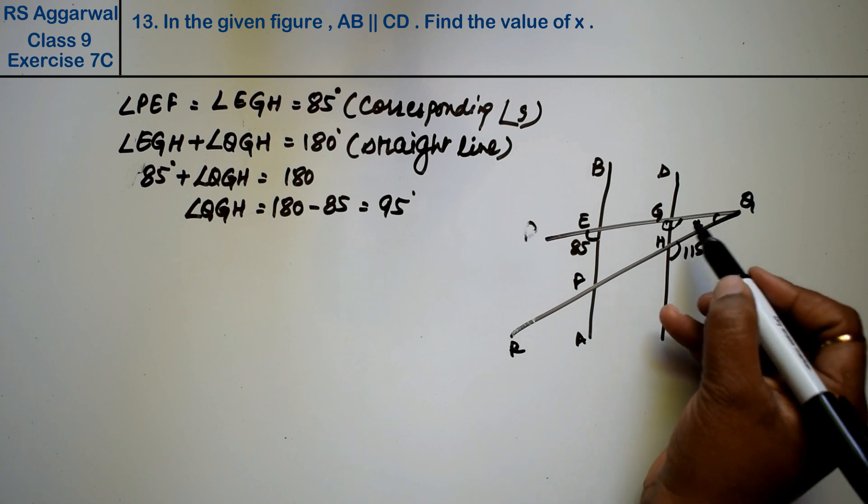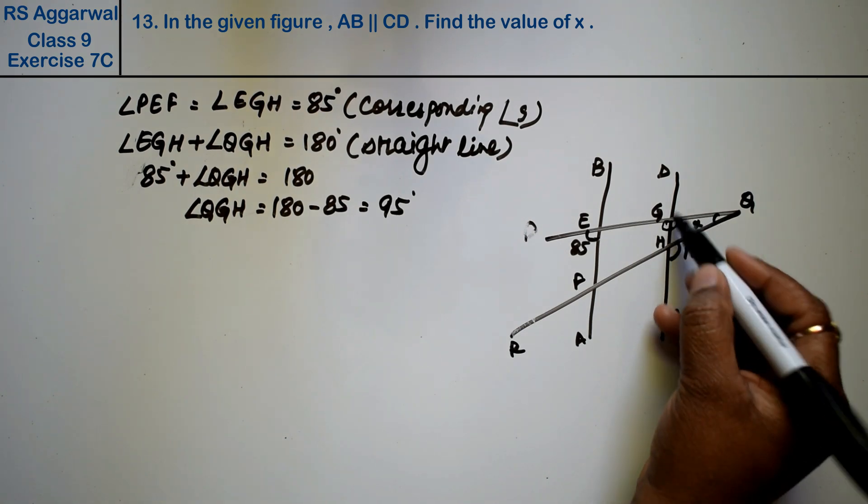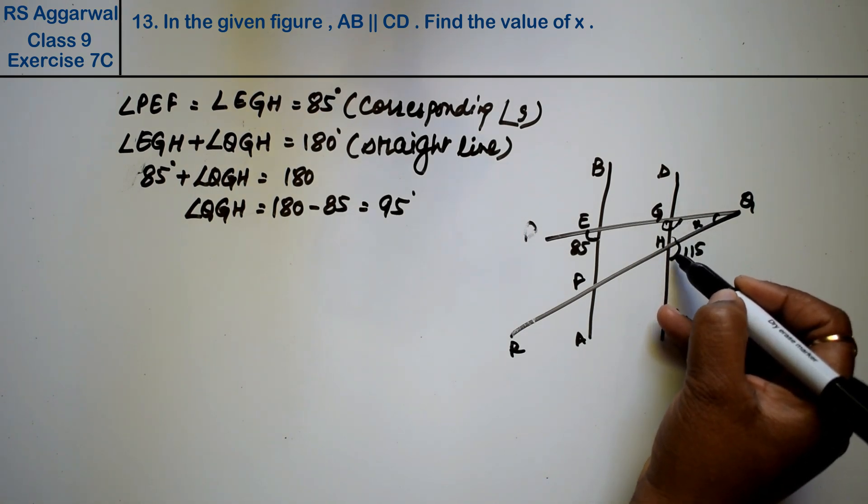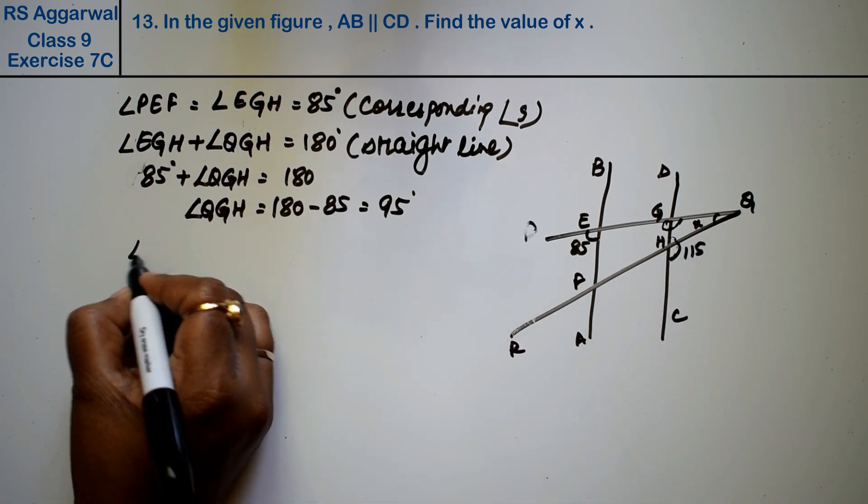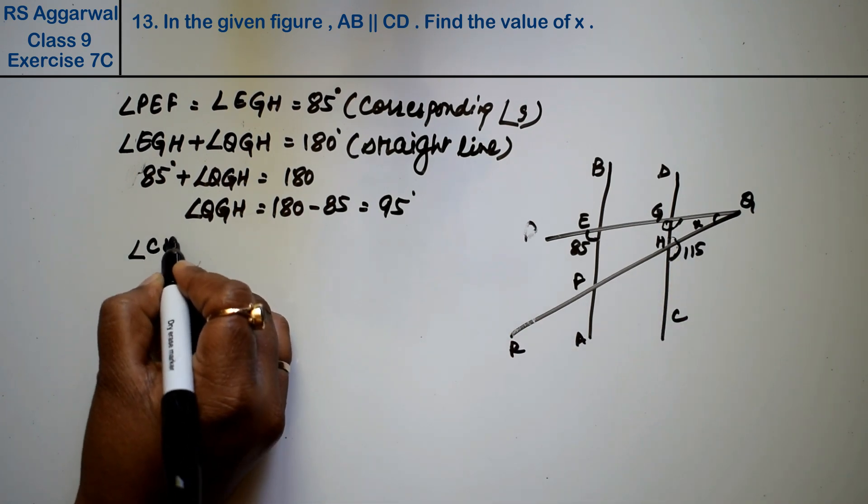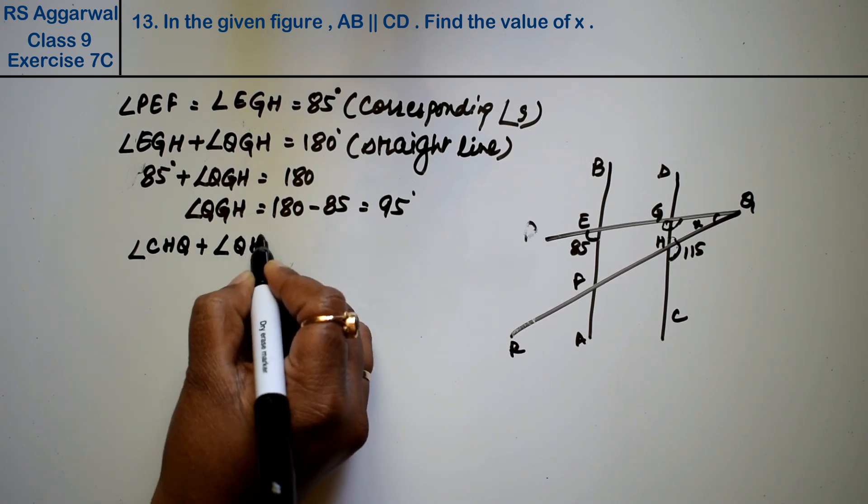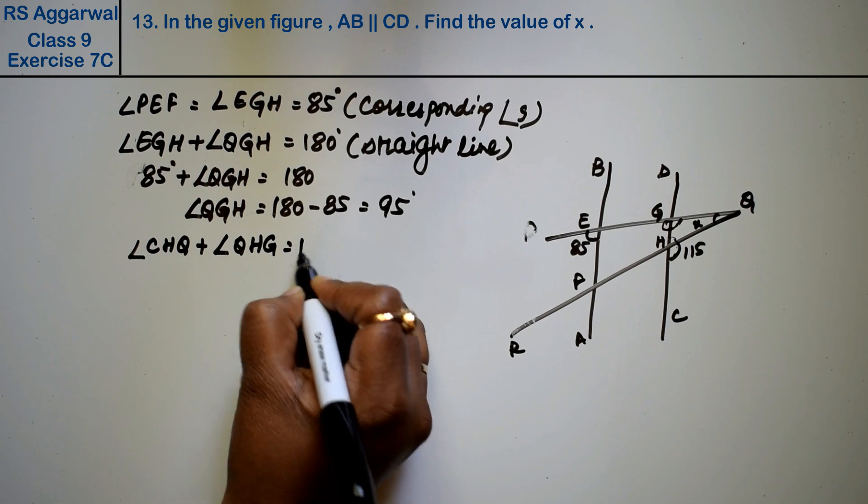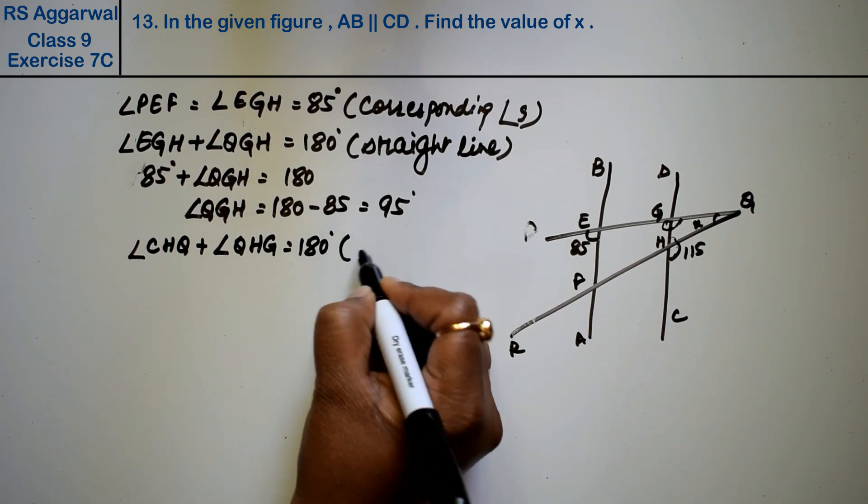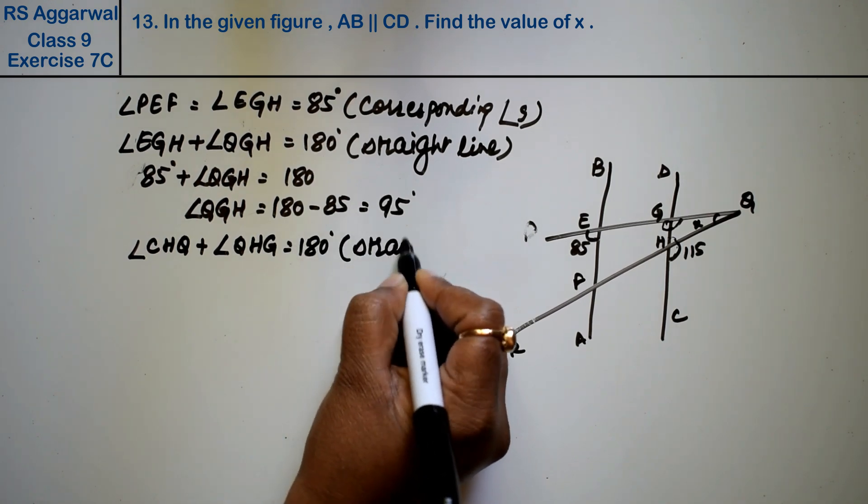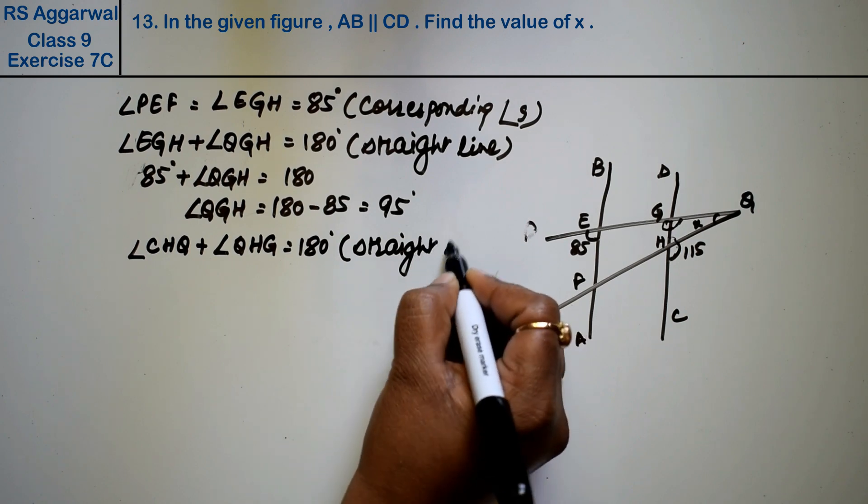Now our angle is found. Now similarly, this is a straight line. So how will this angle also be found? We will subtract from 180. So angle CHQ plus angle QHG equals 180 degrees. Why? Because it is a straight line, right friends.